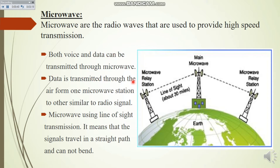Data is transmitted through the air from one microwave station to another. Similar to radio signals, microwaves use line-of-sight transmission, meaning the signal travels in a straight path and cannot be bent. So the main point is that microwave signals always travel in straight lines. You can see in this figure how one tower sends the signal to the next tower, and that tower sends it to the next, so data travels with the help of signals.